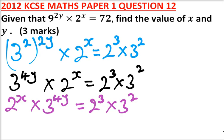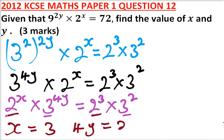Now, since we are saying that the left hand side and the right hand side are equal, and here we have 2, here we have 3, we can equate the index. So we say x here is 3, and then we say that 4y is equal to 2.